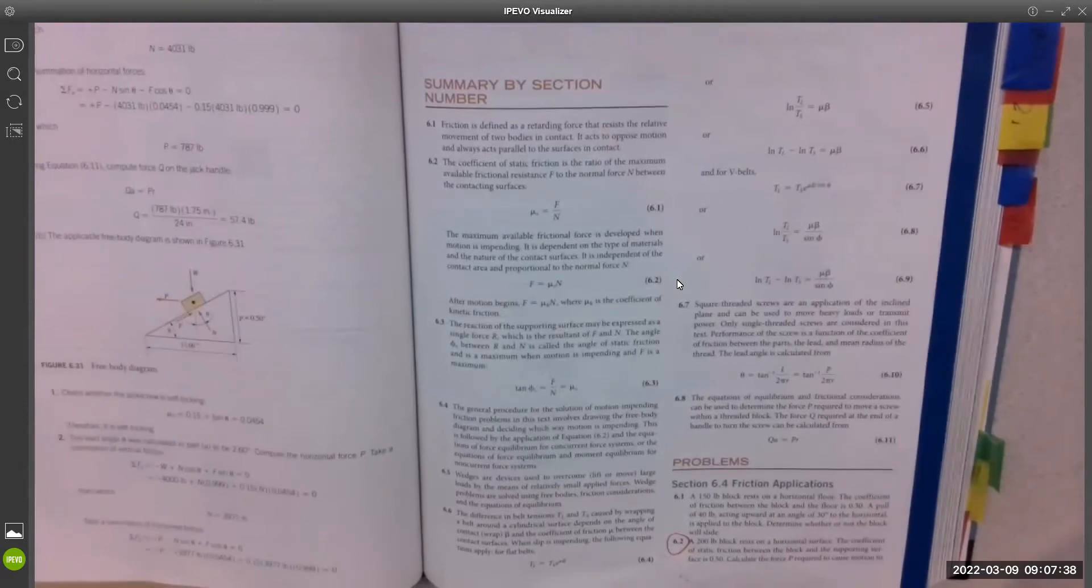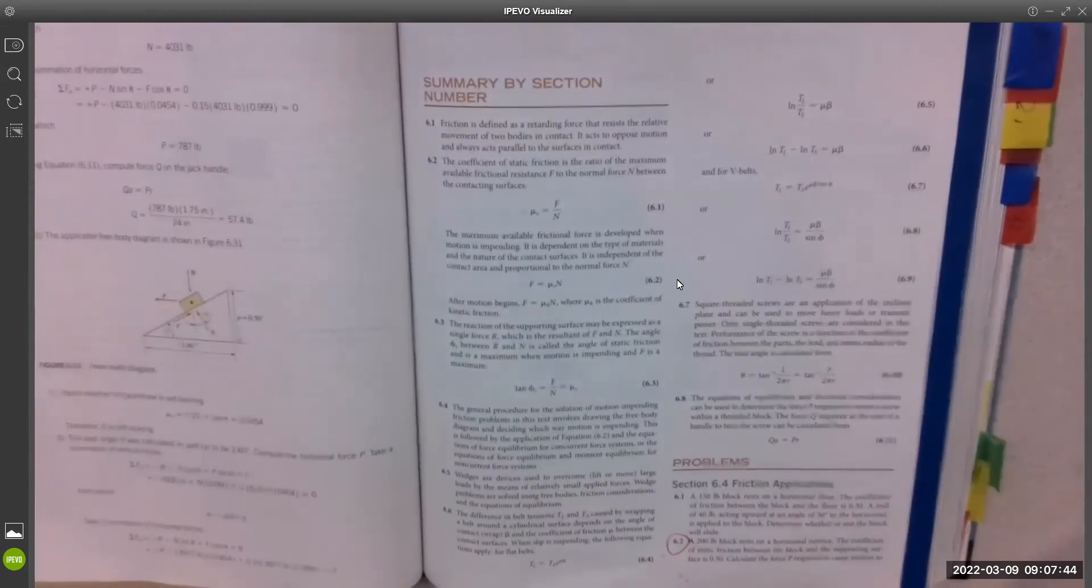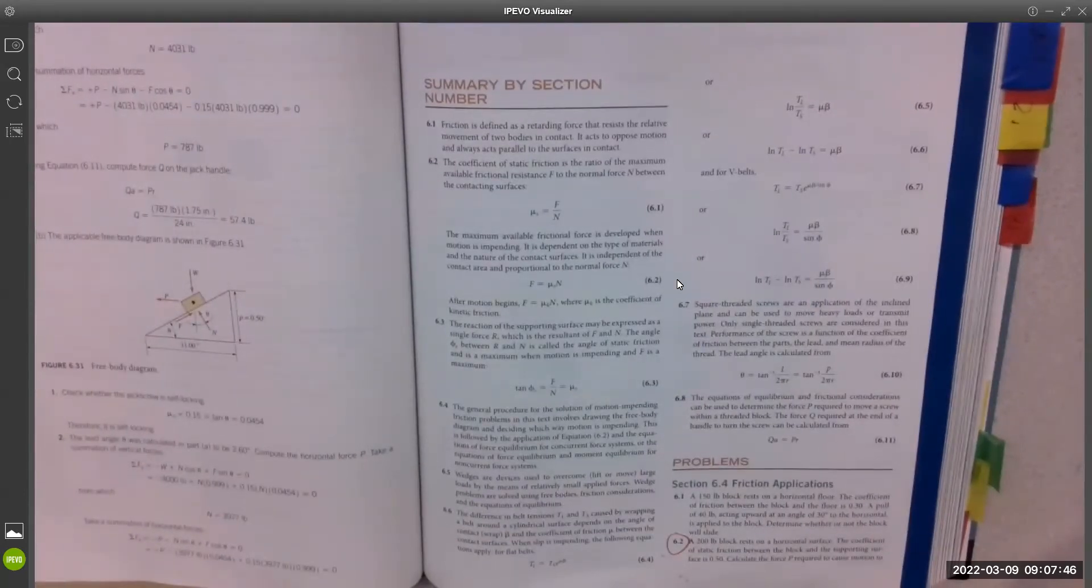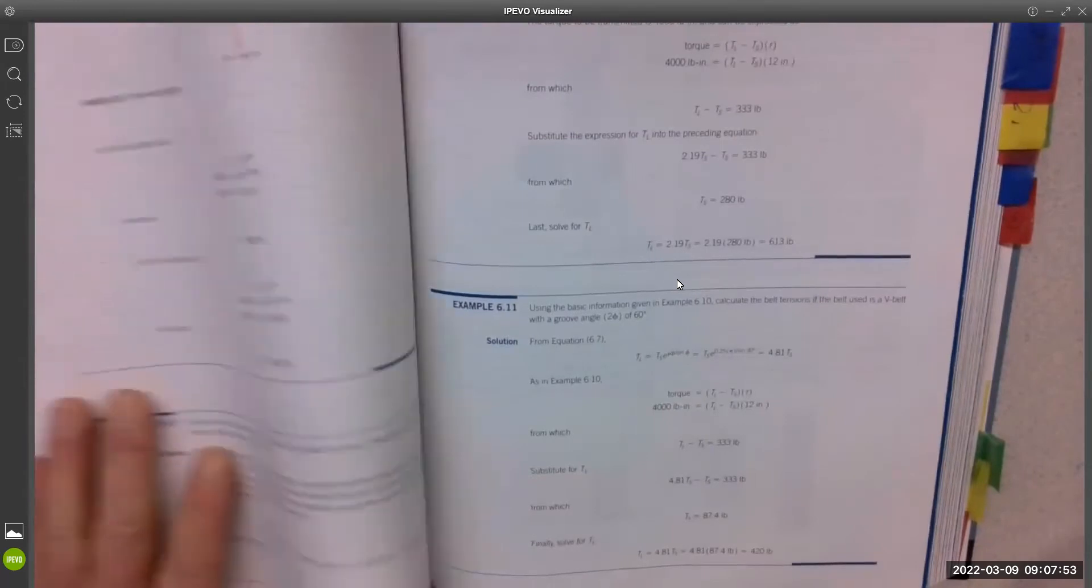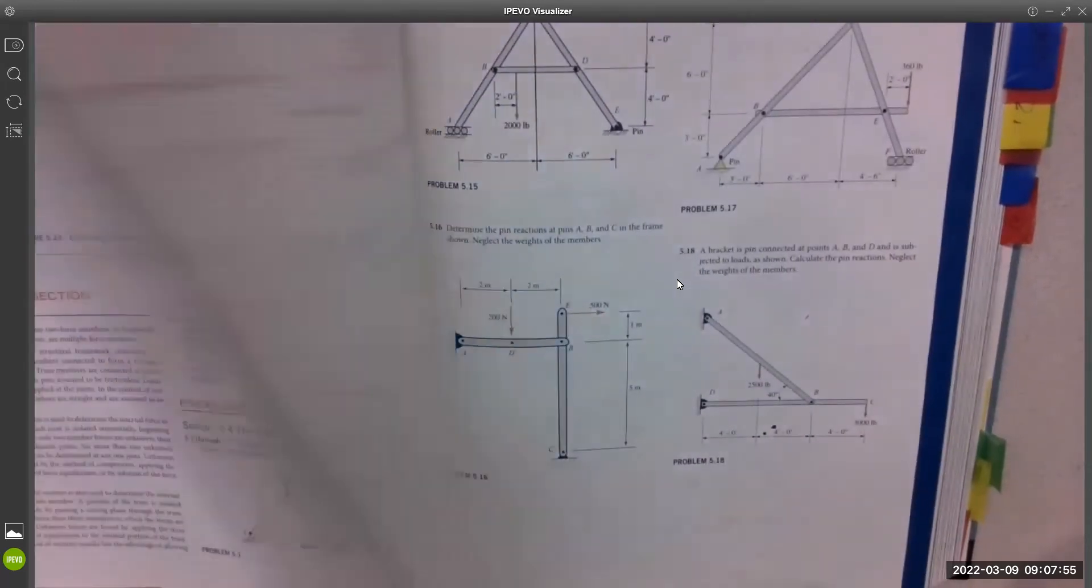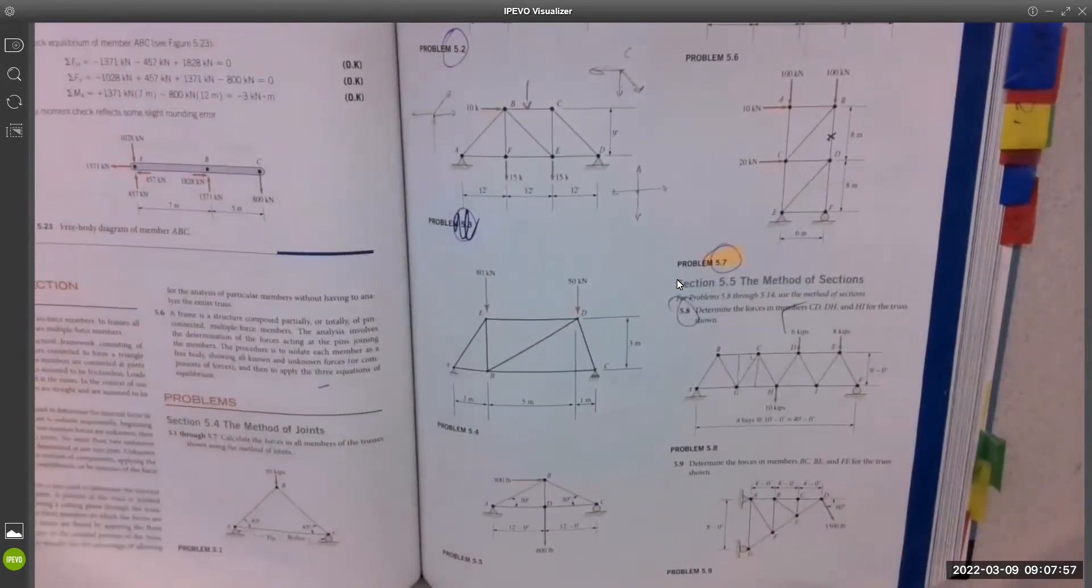So probably one problem. We're looking at 10 problems total. So out of friction, one, out of center gravity or centroids, one. Right. We spent a fair bit of time doing structures, both trusses and frames.